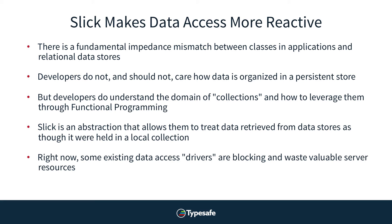Right now, some existing data stores do not have non-blocking drivers, and that does mean there are going to be blocked threads. This can be painful for your application because every thread on the JVM has a weight — by default, 512 kilobytes in size. Think about the impact that has on your heap. But for some databases, such as NoSQL stores like Cassandra, MongoDB, and Riak, there are non-blocking drivers. And there are non-blocking drivers for Postgres and MySQL as well — they just require that you understand how to use and leverage them appropriately.